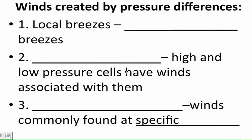Now that we know the basics of wind, let's start looking at three types of wind patterns that we can see across the globe. Number one is going to be local breezes. Today we'll talk about land and sea breezes.